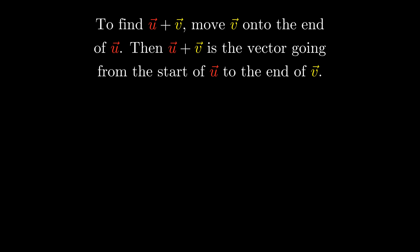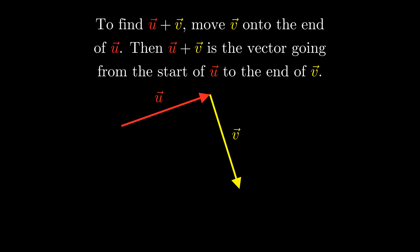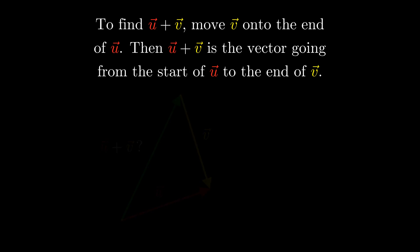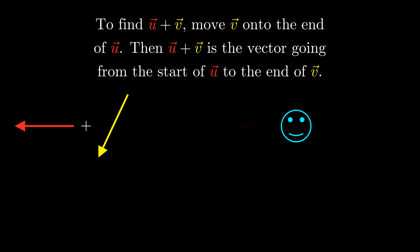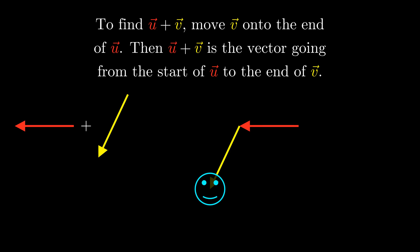Wait a minute — this definition doesn't need parallel vectors, so we can use it to define addition between any two vectors. For example, here are two vectors u and v. We move the second vector such that its start is on the end of the first vector, and then the sum is the vector going from the start of the first to the end of the second. Here's an easy way to think of it: think of yourself as traveling along the vectors. When you see a sum, move as if going along the first vector, then move as if going along the second. The vector from your starting point to your ending point is the sum.